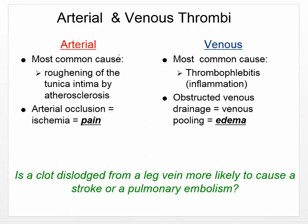Looking at arterial versus venous thrombi: what causes clots to form on the walls of arteries or veins? The most common cause of arterial thrombi is roughening of the tunica media by atherosclerosis. Arterial occlusion can cause ischemia, pain, and something called angina — which is pain when you experience that in the coronary arteries. For venous thrombi, the most common cause is thrombophlebitis — an inflammatory process that happens in the veins leading to a thrombus.